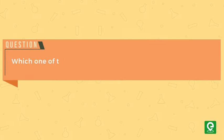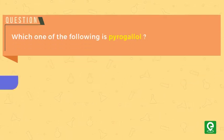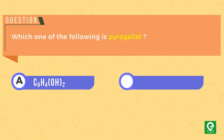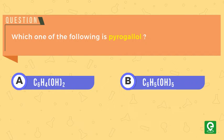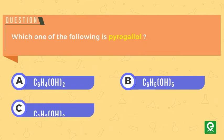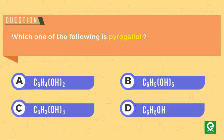Question: Which one of the following is pyrogallol? Option A) C6H4(OH)2, option B) C6H5OH5, option C) C6H3(OH)3, option D) C6H5OH.